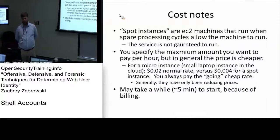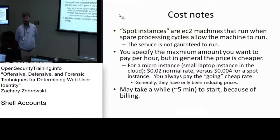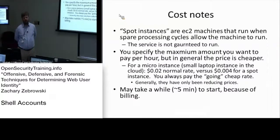There are spot instances on the Amazon Cloud — basically if Amazon has extra processing power available, they will allow you to run a virtual machine on their space for cheaper than their standard price. The only issue is that it takes about five minutes or so for the machine to start, which is one downside with spot instances.